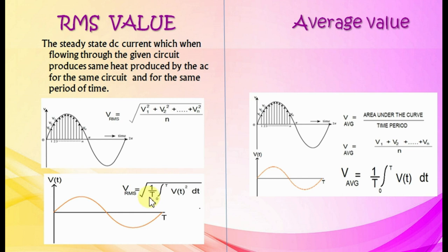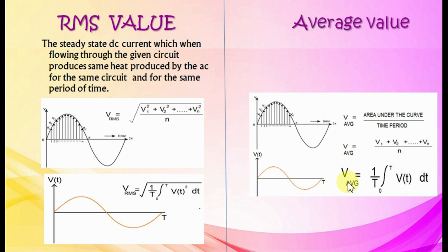Average value is the average of all instantaneous values during one alternation. V average equals area under the curve divided by the time period of that area. Or V average equals (V1 plus V2 plus ... plus VN) by N. Another equation: V avg equals (1 by T) integral from 0 to T of V(t) dt. Some waveforms and their average and RMS values are given in the table below.